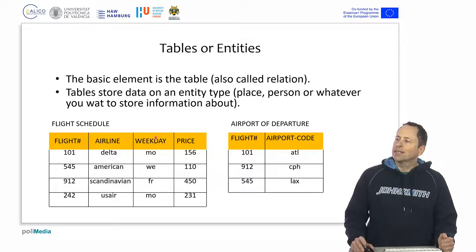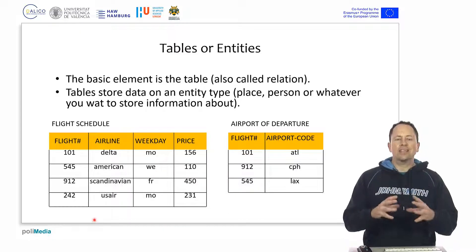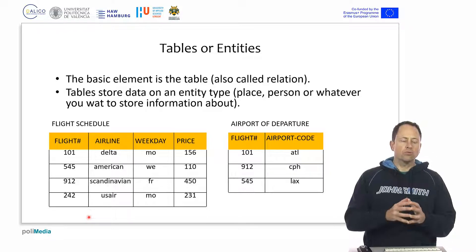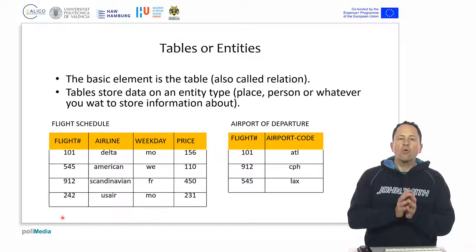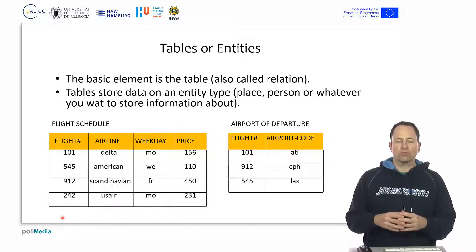Each table is defined to store data of a specific entity. A specific entity is a noun, a thing, a place — something about which we can store data.